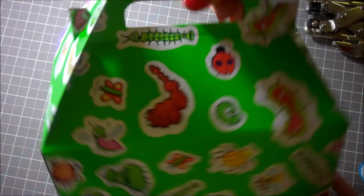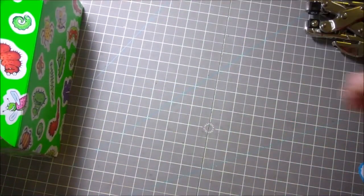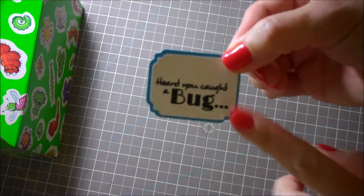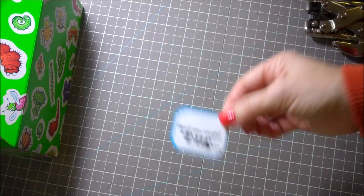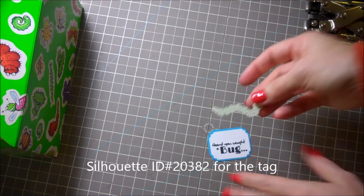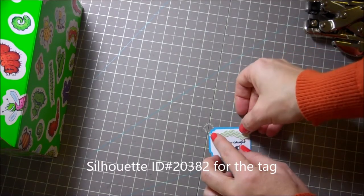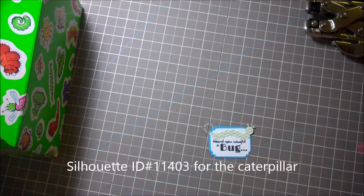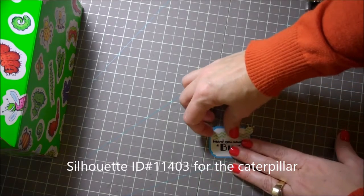And now I'm going to start doing a little tag for it. So the tag that I did here was off of the Silhouette store and it says Heard You Caught a Bug. And this is from the Scrappy Mom's stamp set. And then I cut out this little caterpillar which is kind of like a little bug and I added it and I just printed it off on some fun little paper. So you could do polka dots or any kind of paper that you want to do.